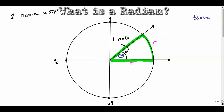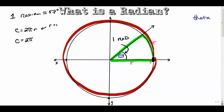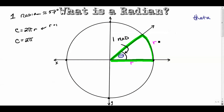We know that the circumference of a circle is 2πr. Let's assume our radius is one — we're going to work with the unit circle, where the radius is one, so the circumference is 2π units. That means the distance all the way around is 2π. We also know that 360 degrees is a full circle, so a full circle — 360 degrees — is also equal to 2π radians.